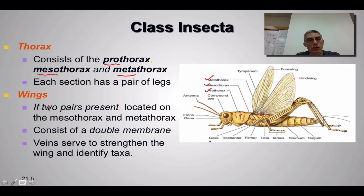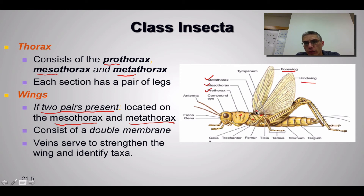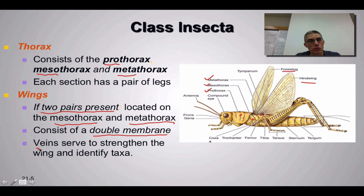If this insect has wings, there are typically two pairs of wings present, located on the mesothorax and metathorax regions of the insect. You can see the two pairs of wings in the diagram — a forewing and a hindwing. The forewing is located around the mesothorax region, and the hindwing is located in the metathorax area. Most wings consist of a double membrane type of structure, and something typical of insect wings is the venation — a pattern of veins that helps strengthen the wing and give it integrity. For scientists, venation is also used to help identify what taxon an insect might belong to.